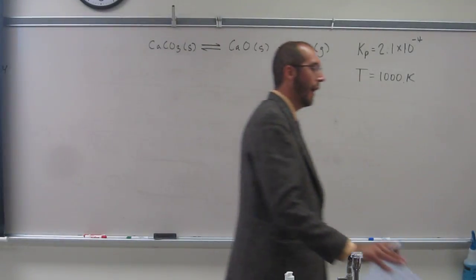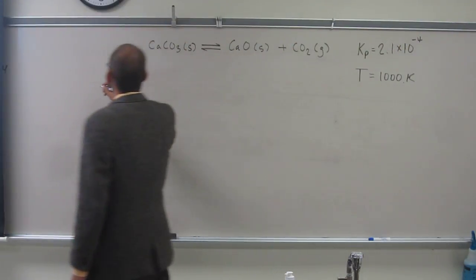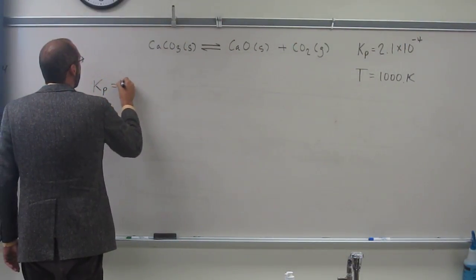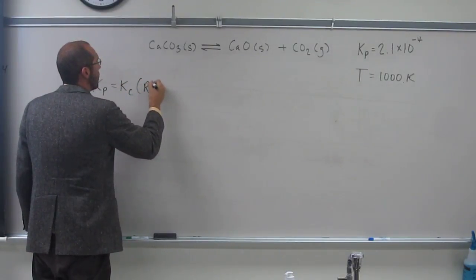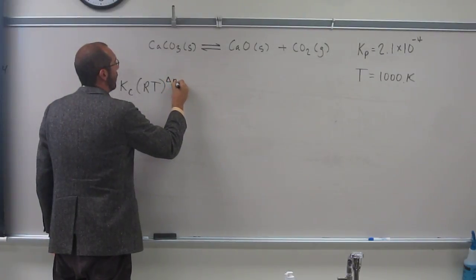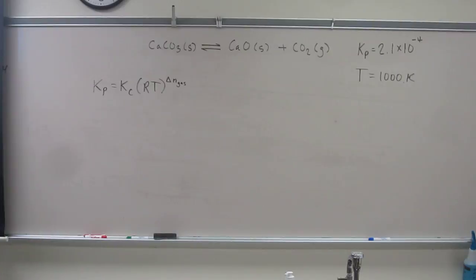So we have the formula that we were just given for the conversion of Kp to Kc, right? So it was Kp equals Kc times RT raised to the change of the number of moles of gas in the reaction. So notice it's just gas in general. It doesn't matter what the identity of the actual gas is.